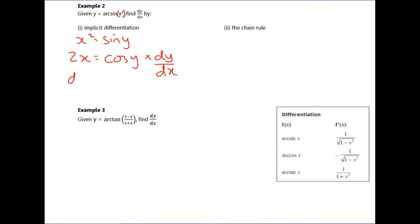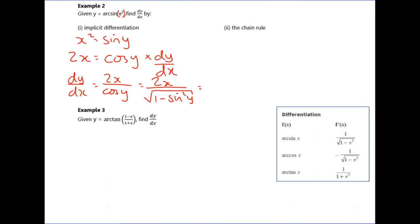Divide through by cos(y) to get dy/dx on its own. Then write cos(y) as √(1 - sin²y). Since sin(y) = x², sin²y = x⁴, so dy/dx = 2x over √(1 - x⁴). That's the final answer for the implicit approach.